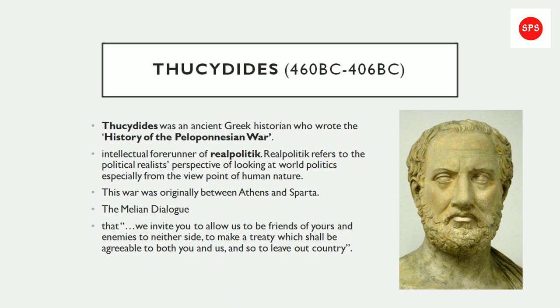The Melians proposed to make a treaty agreeable to both sides and so to live out their country — an attempt to preserve their self-esteem. Naturally, Athens destroyed Melos and established itself. The policy of Athens was that the standard of justice depends on the equality of power to compel.